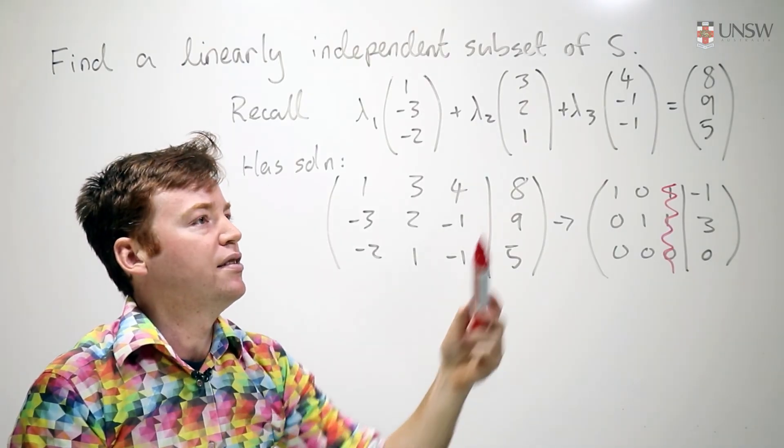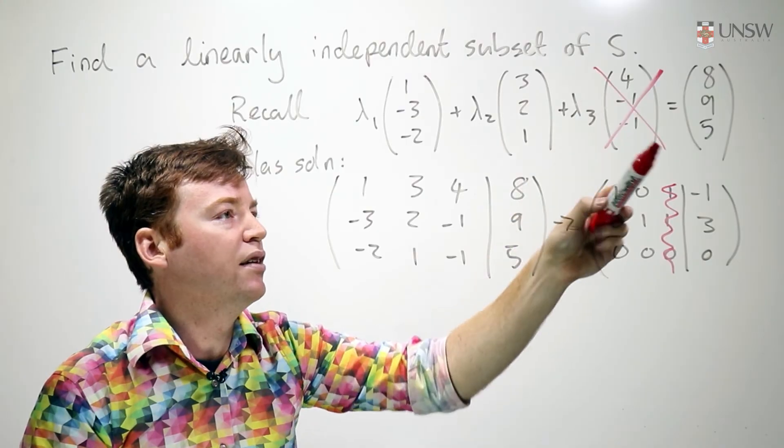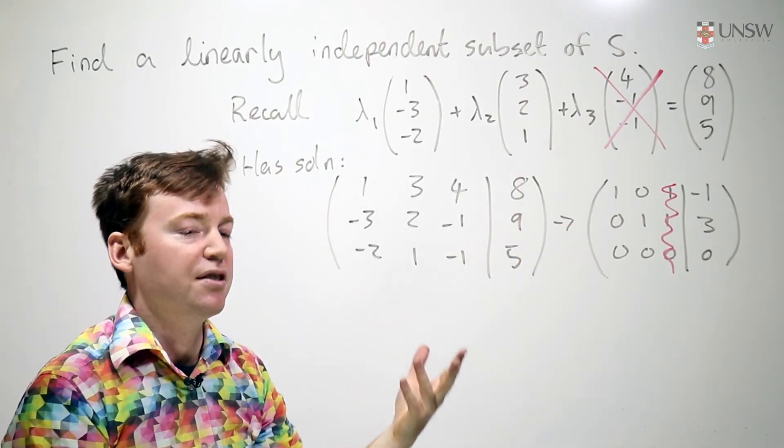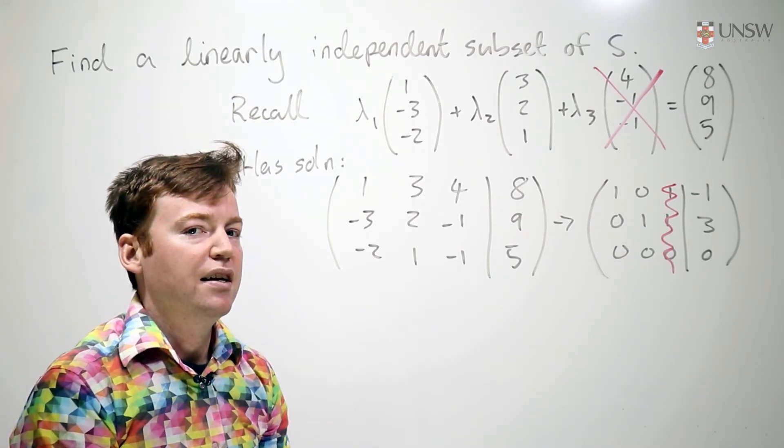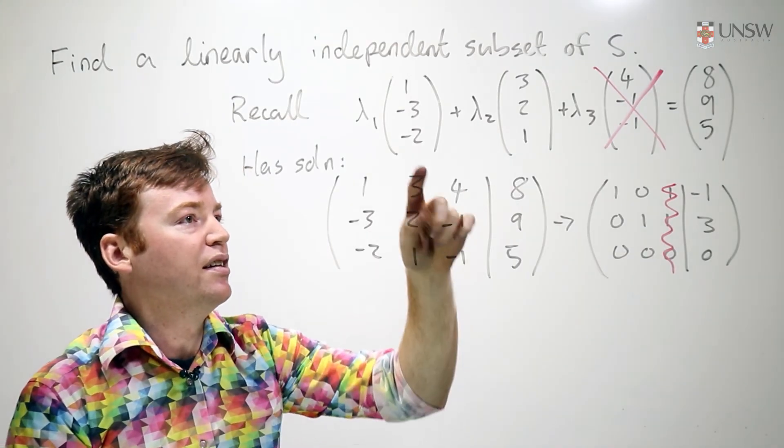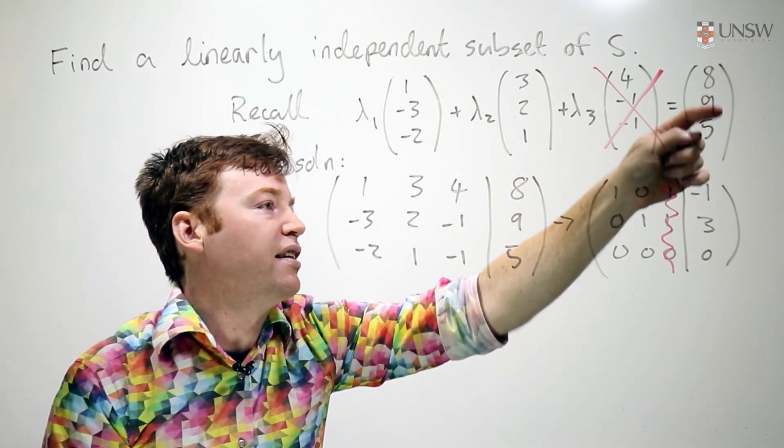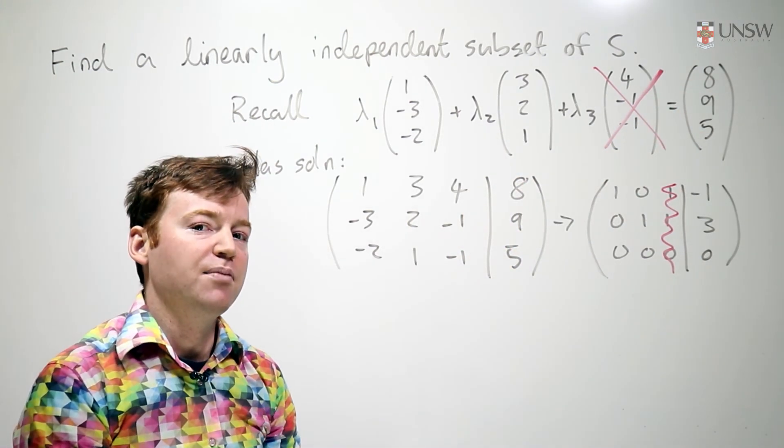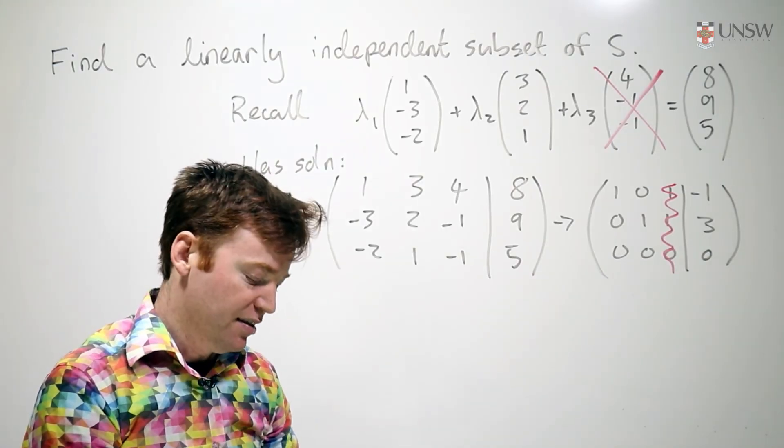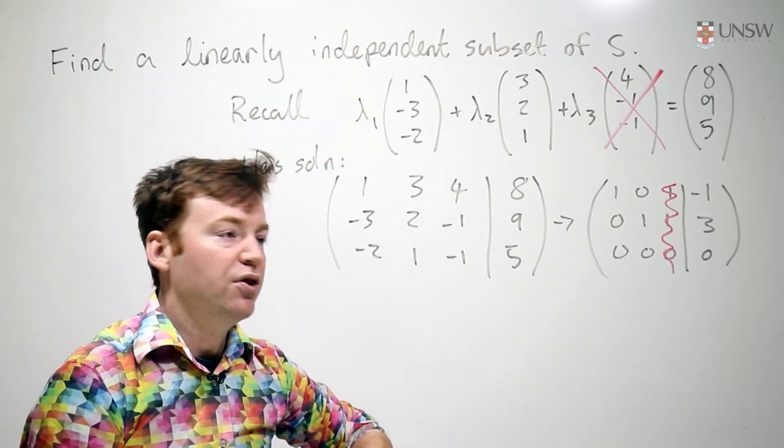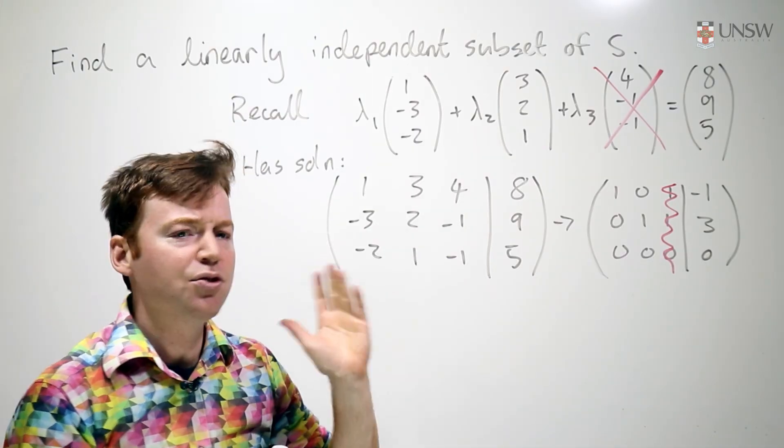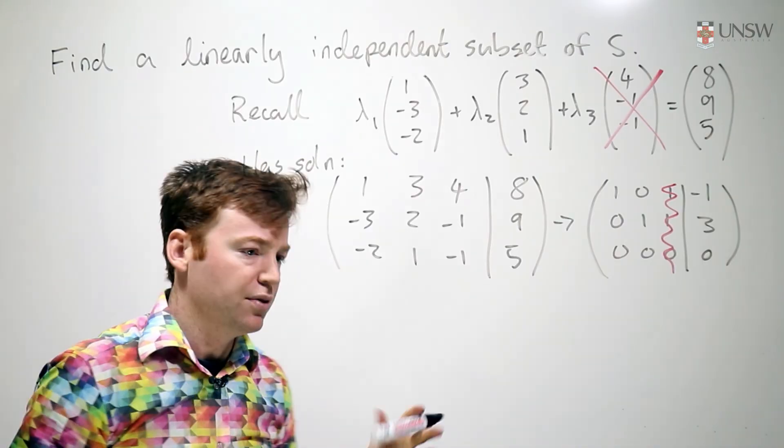That tells me that this vector here, this one, I don't need it. And in fact, it's just redundant. Fantastic. Now, if I express, now my expression is unique. And hence, this is my linearly independent set of vectors. And the process is the same for your set of vectors or any set of vectors you encounter, just chop off the ones corresponding to non-leading columns.